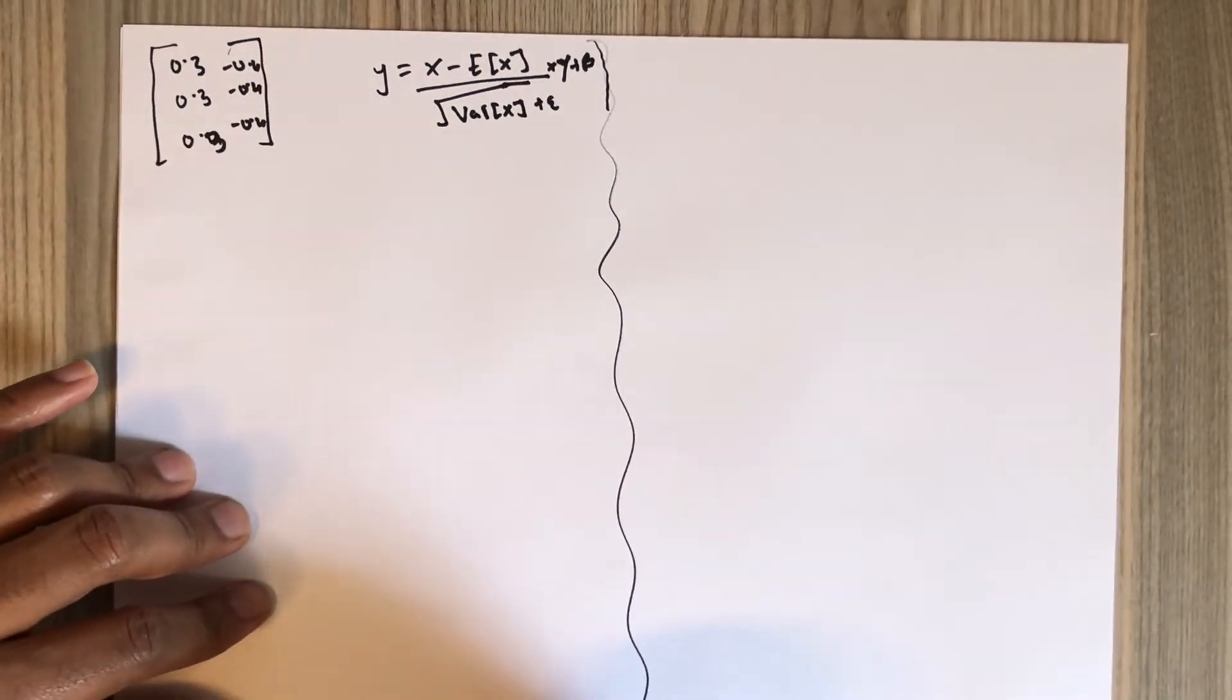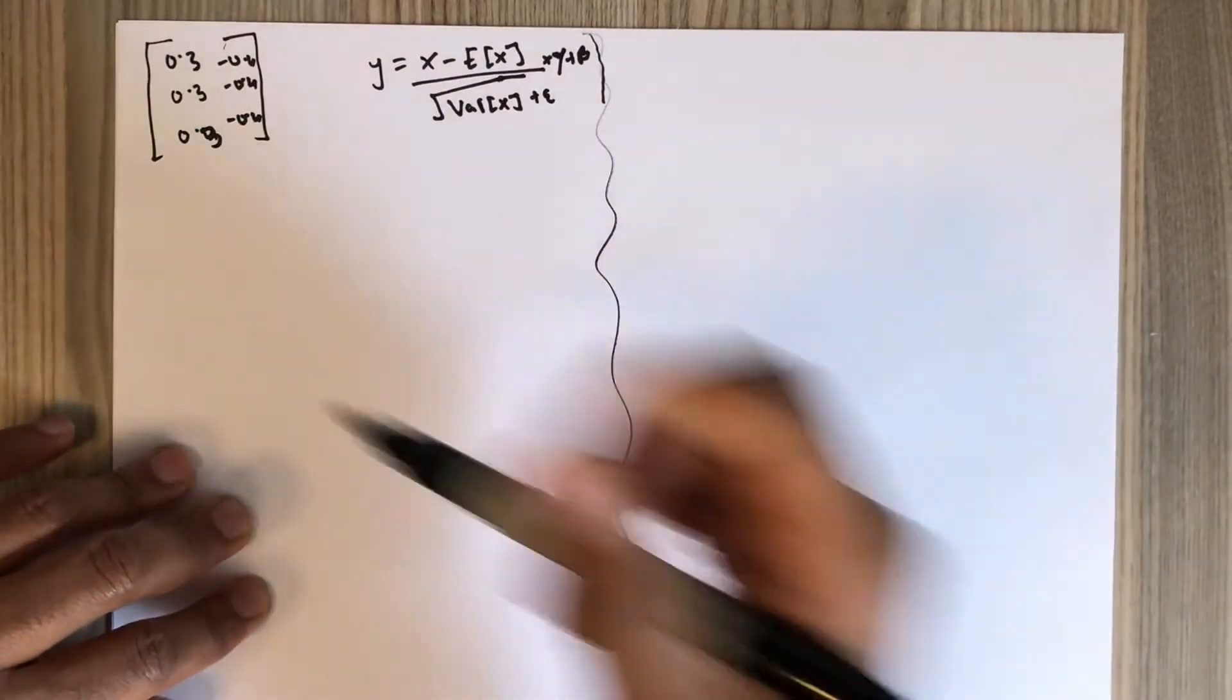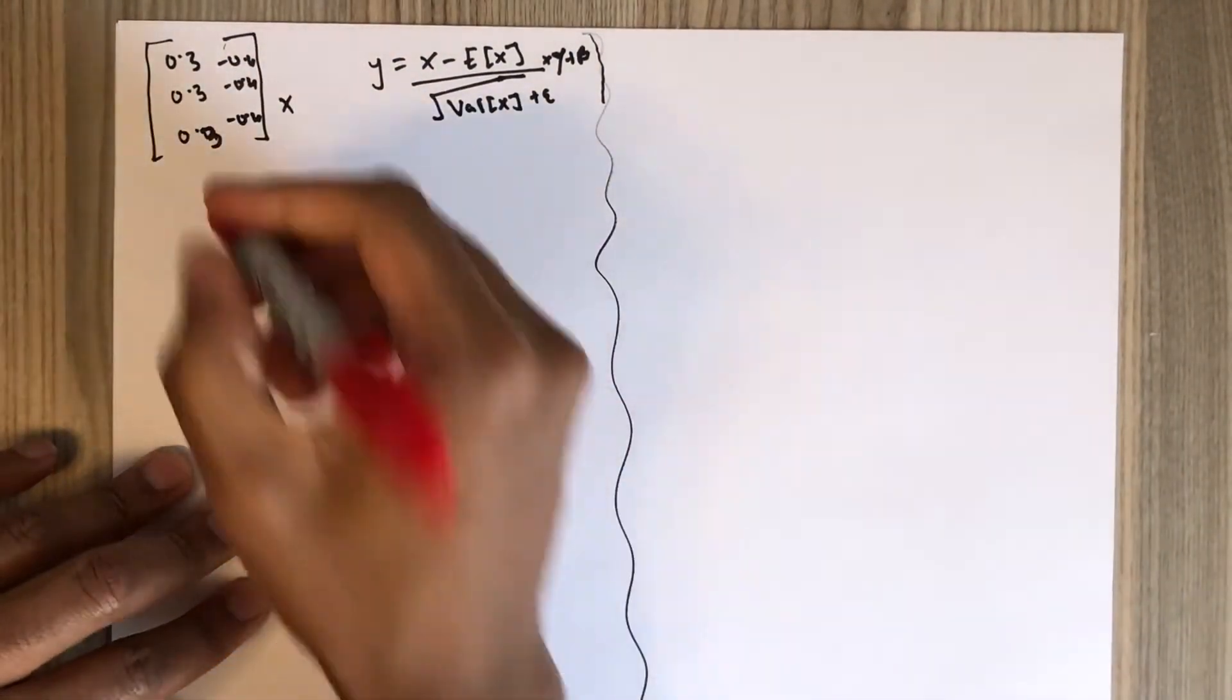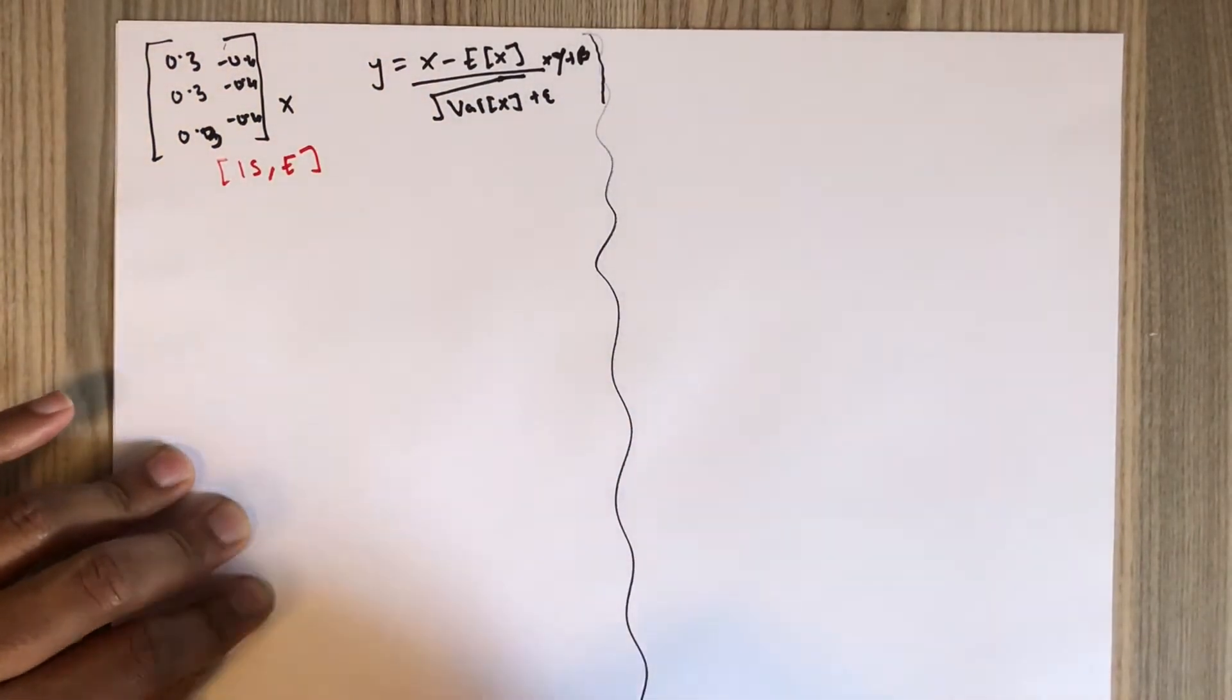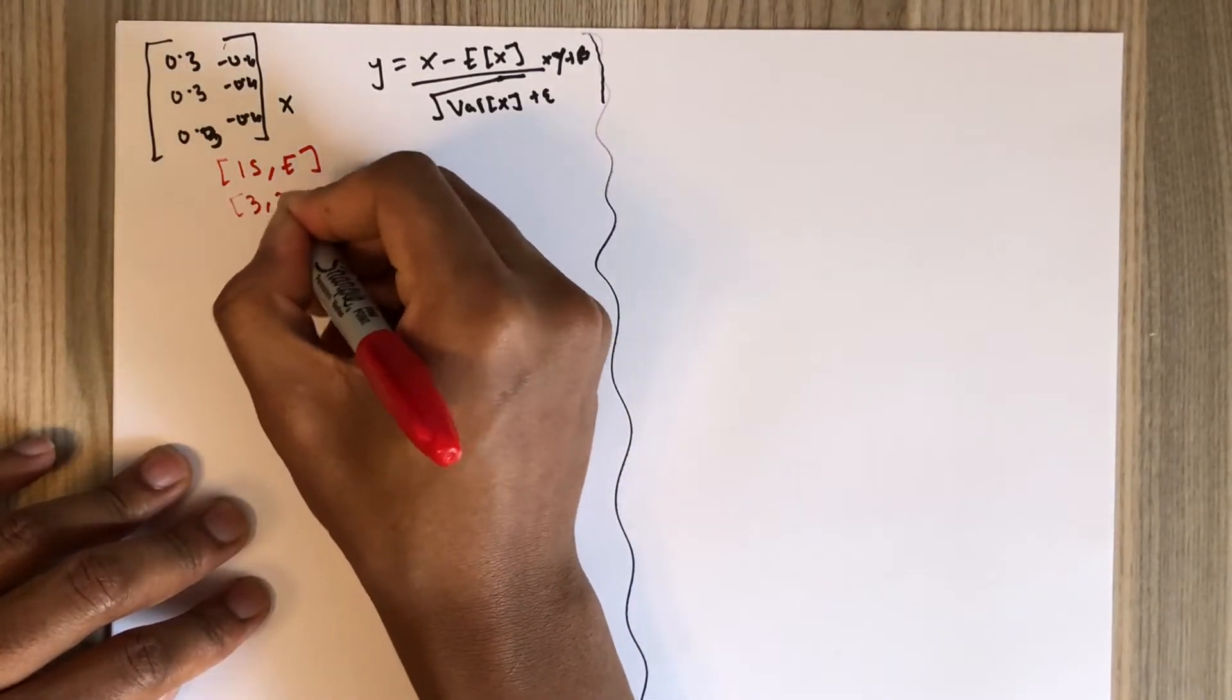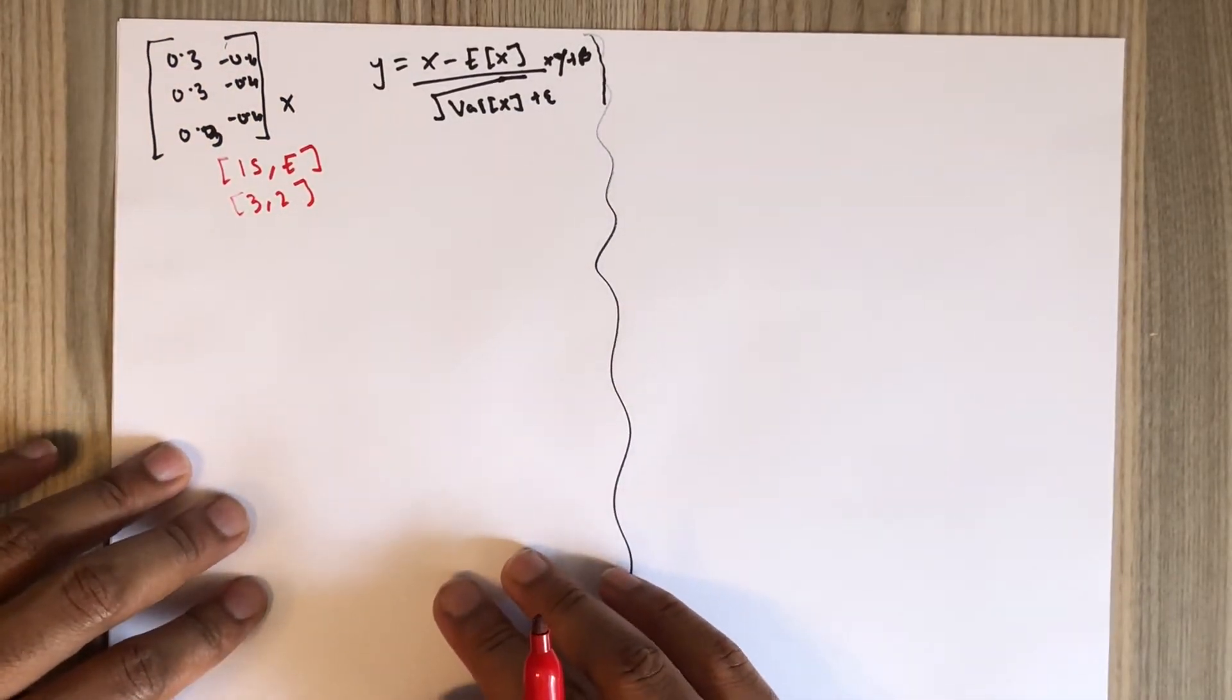The dimension of X, as always, is IS by E (input size by embedding dimension), which is 3 by 2. Let's start by computing the expected value.